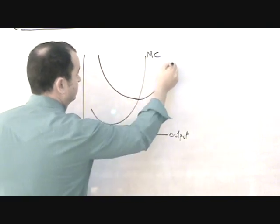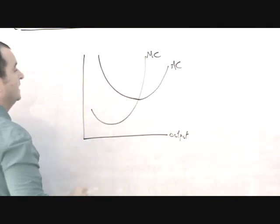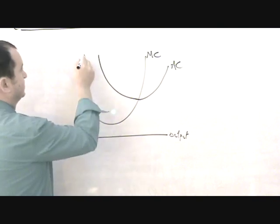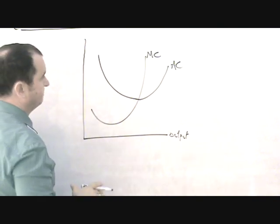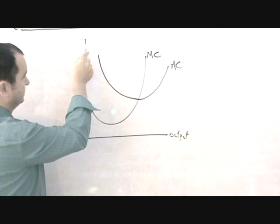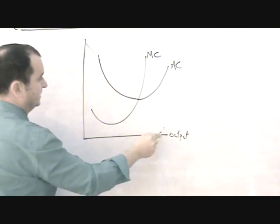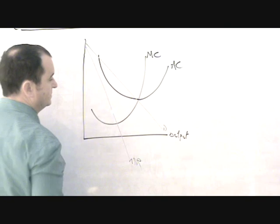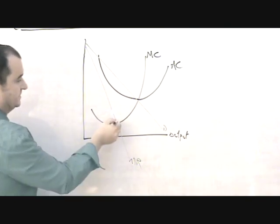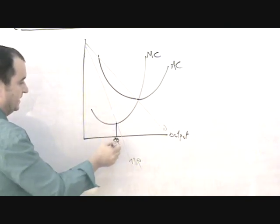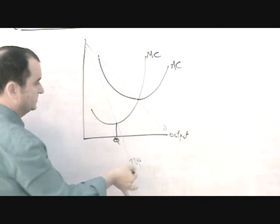That generates an average cost curve that looks like this. And perhaps the firm is also facing the downward sloping demand curve and marginal revenue curve thus. And if it profit maximises, it will produce here, the output level Q because MC equals MR.